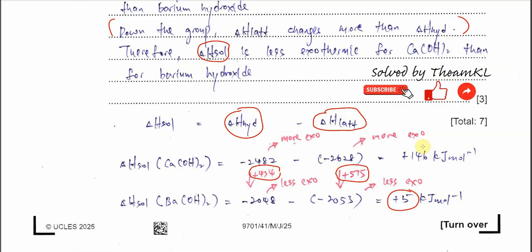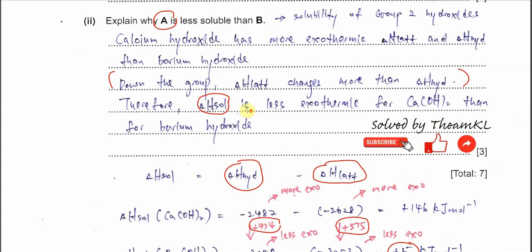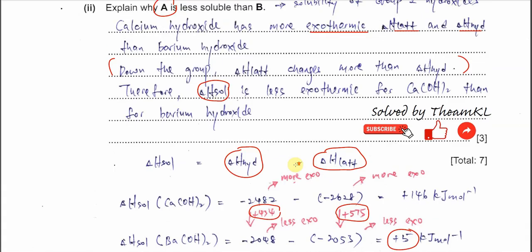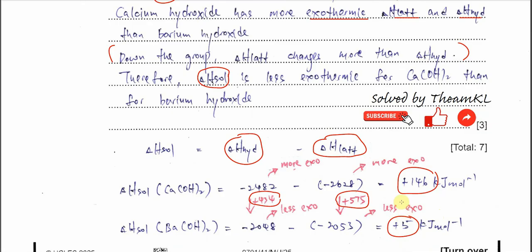So that is the relationship between them. For calcium hydroxide, the lattice energy and hydration enthalpy are both more exothermic, but the lattice energy change is larger, so the enthalpy change of solution is less exothermic compared to barium hydroxide. This is the explanation — if it's not fully clear, you can follow the previous standard explanation for Group 2 hydroxide solubility.